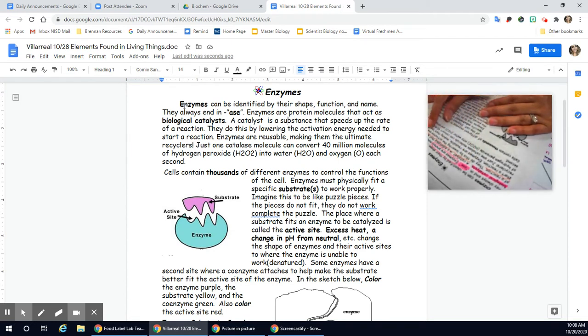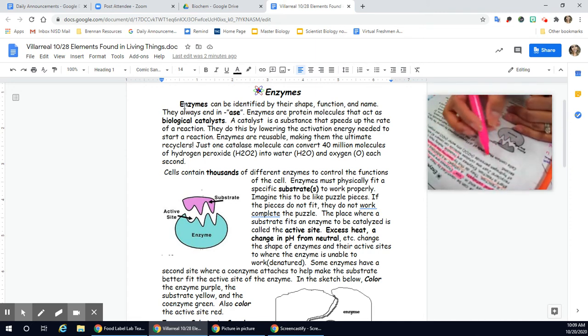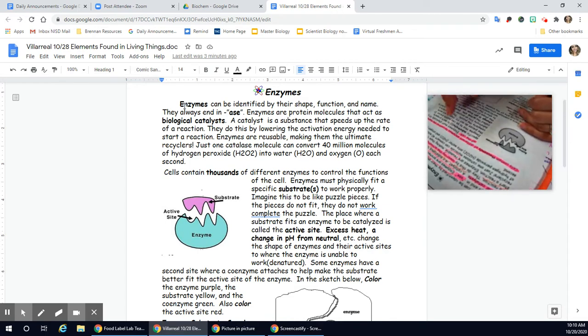They do this by lowering the activation energy needed to start a reaction. So let's say I need a whole bunch of energy to even start this. So instead, an enzyme can lower that. So I don't need as much energy anymore to do the entire reaction. I can lower the activation energy. Enzymes are reusable, which is awesome. So they are reusable, making them the ultimate recycler. So I can use an enzyme many times. Just one catalyst molecule can convert 40 million molecules of hydrogen peroxide, that's H2O2, into water, H2O, and oxygen each second. Wow, that's amazing. Cells contain thousands.